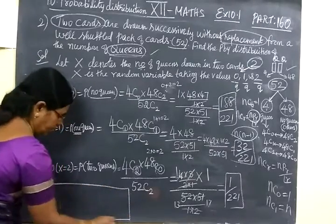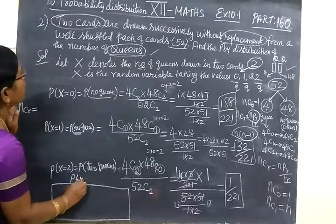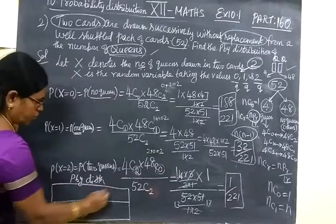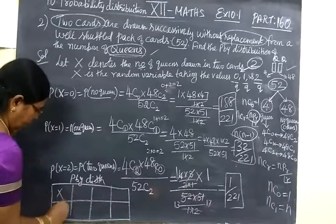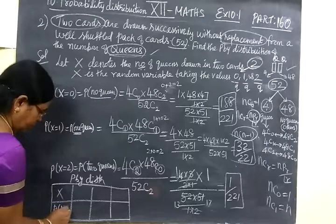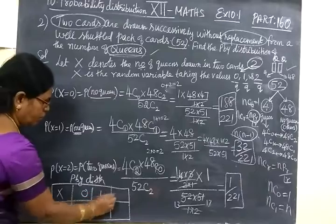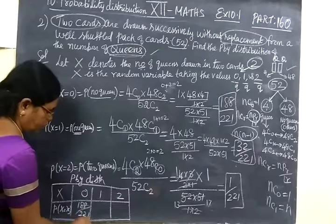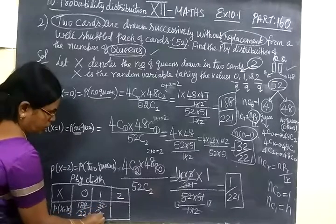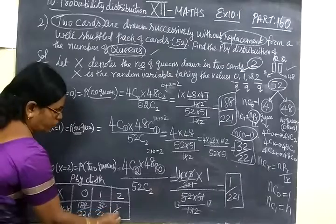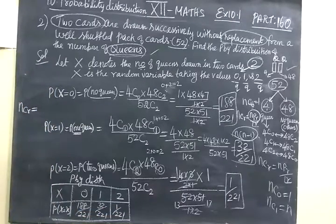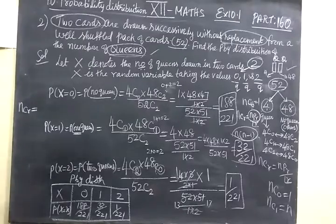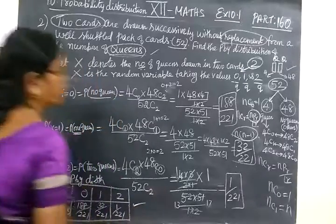Now you write probability distribution. We have X equal to 0, 1, 2. When you put 0, answer is 188 by 221. Then 32 by 221. Then 1 by 221. That will be correct. Thank you.